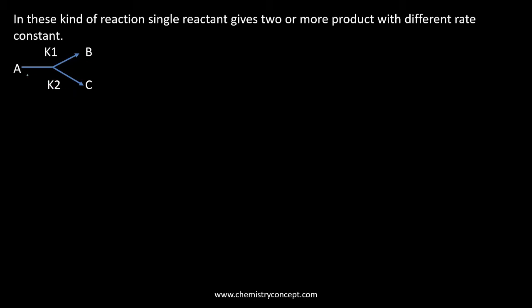Suppose we have a reaction where the reactant is A, which is going to give you the products B and C. This kind of reaction is known as a parallel reaction or side reaction.